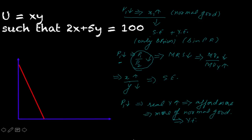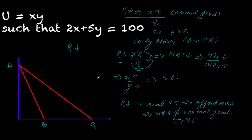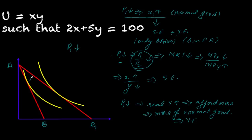Let's practice the diagram. We have the initial budget line AB. Let's assume p1 falls, so we have the new budget line AB1. Let's mark them: AB is the original budget line, and AB1 is what we get if p1 falls. We mark our original IC and new IC. Since Hicks and Slutsky do not differ in how to calculate equilibrium, e0 and e1 remain the same for both — they are not the points obtained from substitution or income effect.